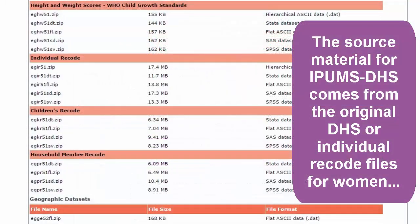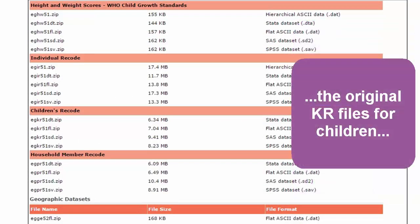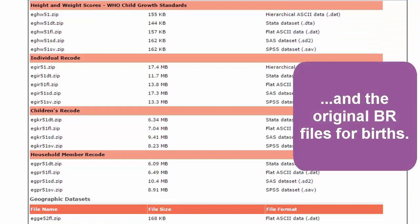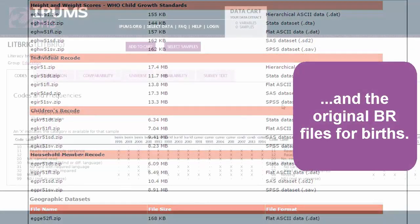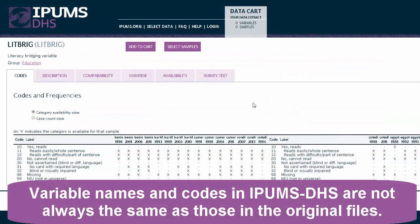The source material for IPHMS DHS comes from the original DHS or individual recode files for women, the original KR files for children, and BR files for births. However, variable names and codes in IPHMS DHS are not always the same as those in the original files.